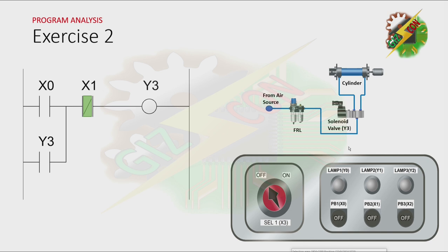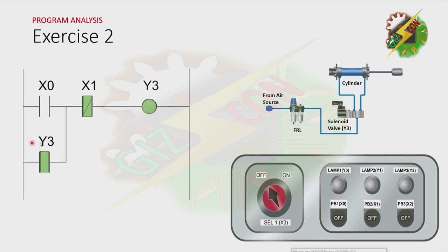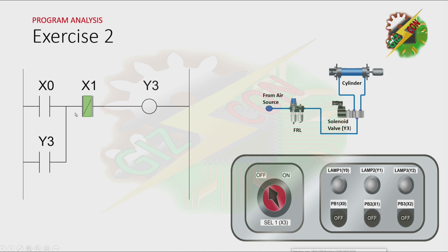Let's press PB1. As you can see here, when you press PB1, X0 is activated, and that will cause Y to turn on, which is the solenoid. And because there is latching here, Y will not turn off. The only way to turn it off is by pressing PB2, which is X1.